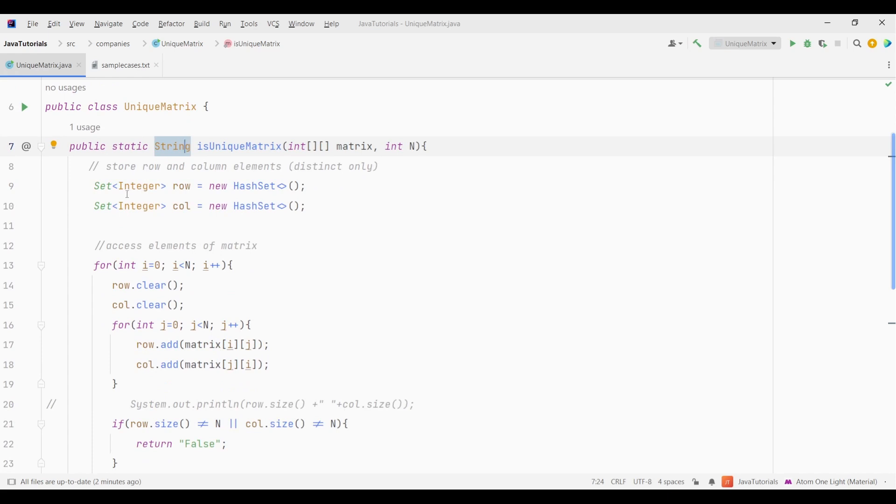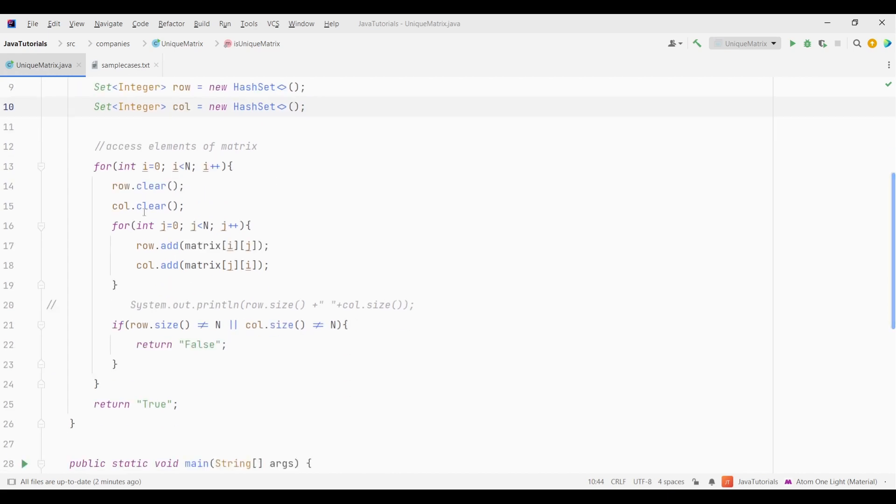Now as we discussed the approach to solve this question, we are going to need two sets. First is row set and second is col set which will store the respective row and column values. Then I have used a for loop from 0 to n to access the matrix elements.